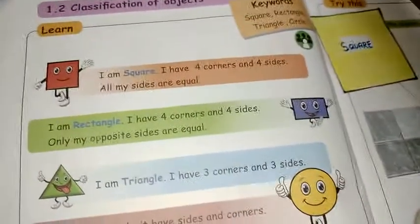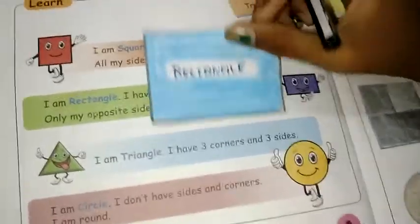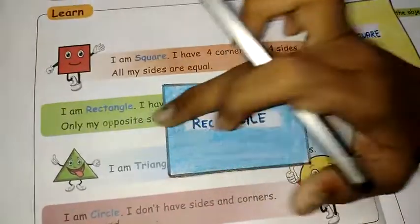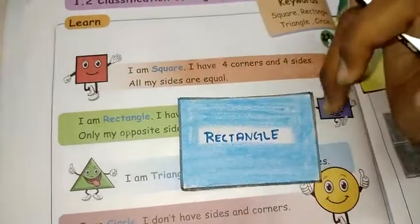I am rectangle. I have four corners and four sides. Only my opposite sides are equal. Yes, opposite sides are equal. It has four sides and four corners.